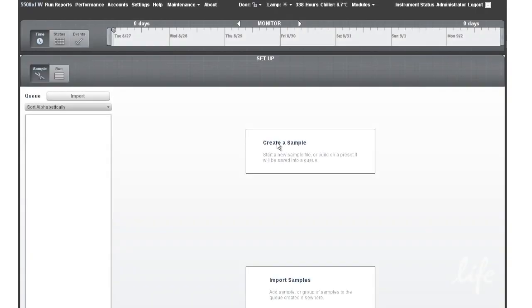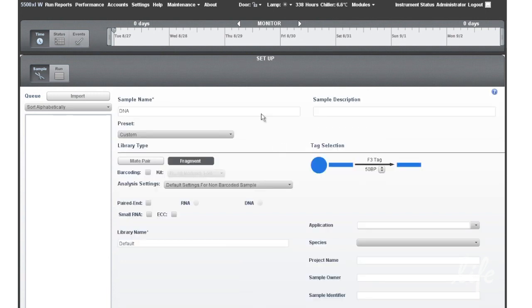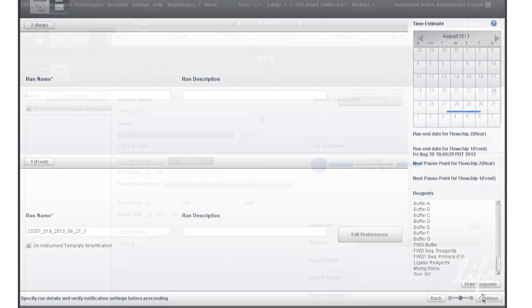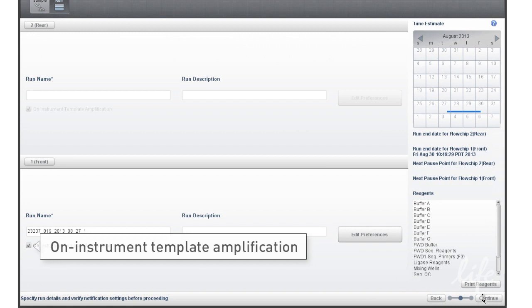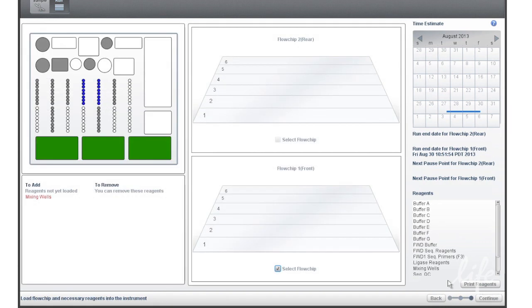When the reagent deck is set up, proceed to setting up the run in the ICS or instrument control software. Make sure to check the On Instrument Template Amplification box to enable template amplification. Follow the instructions in the 5500 Wildfire User Guide for more information on setting up the run.